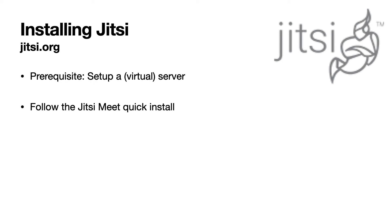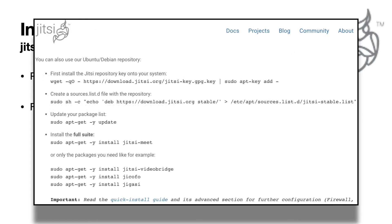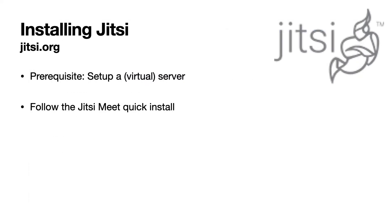First off, you need to set up a dedicated or virtual server that hosts the Jitsi video chat software. There are many providers and I will not go into the details of setting this up. Make sure to set up a domain name that points to the server. I also do not want to reiterate what the Jitsi quick install guide already tells you — have a look at that at the Jitsi.org website.